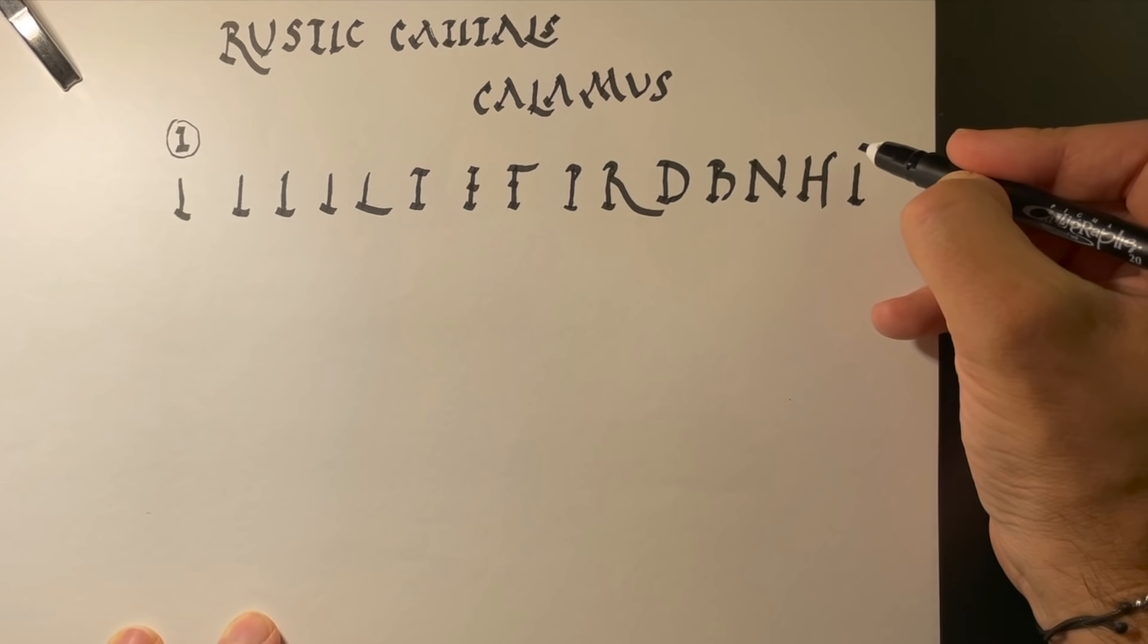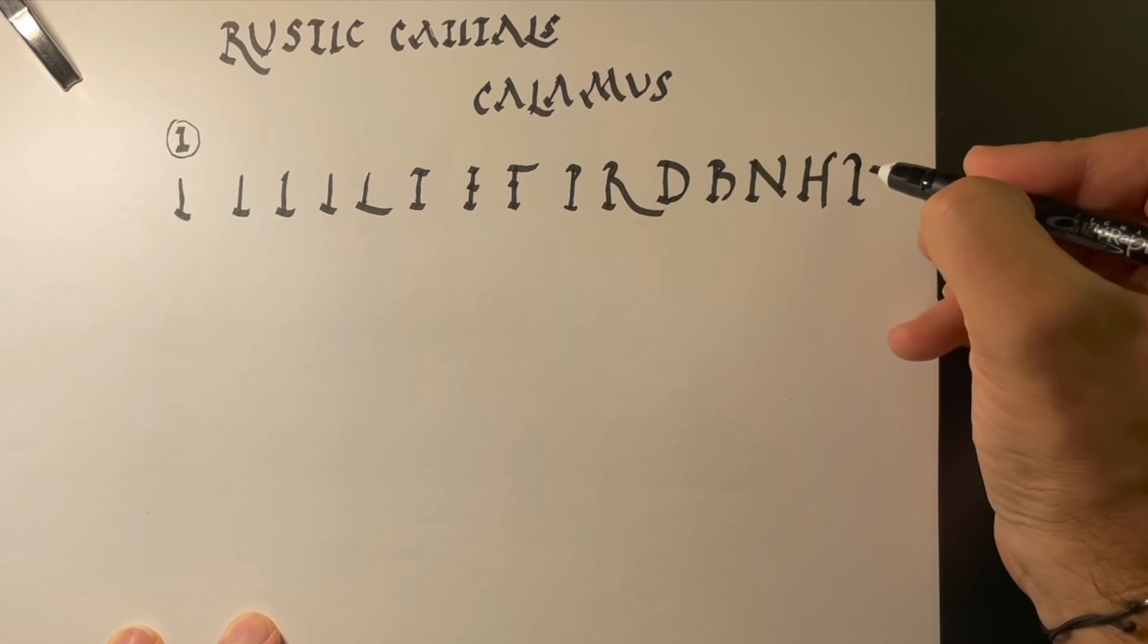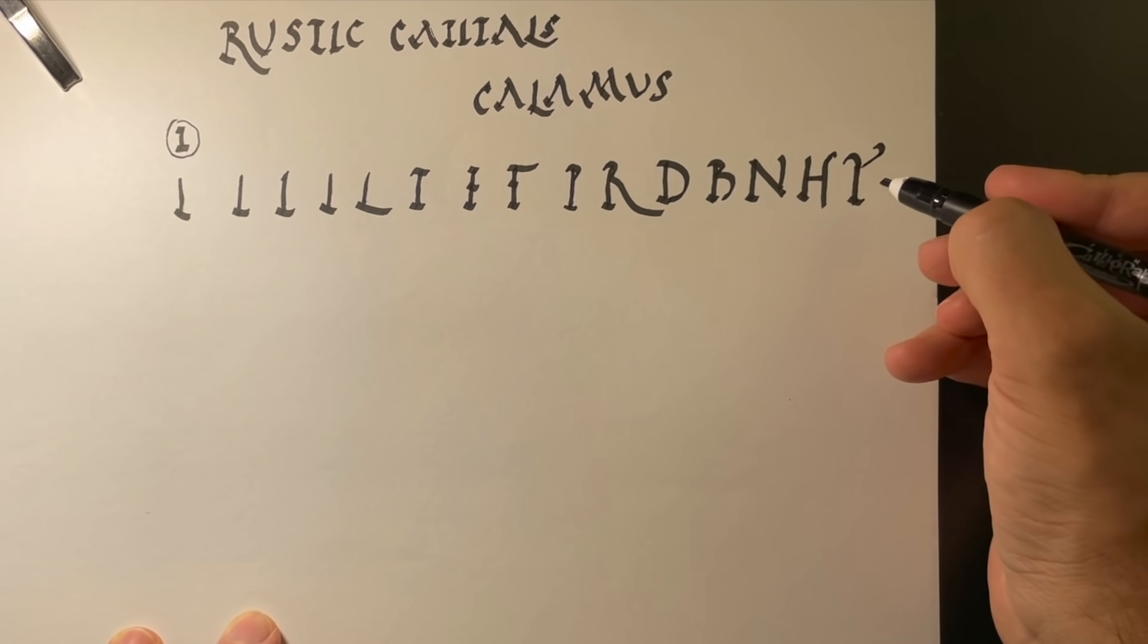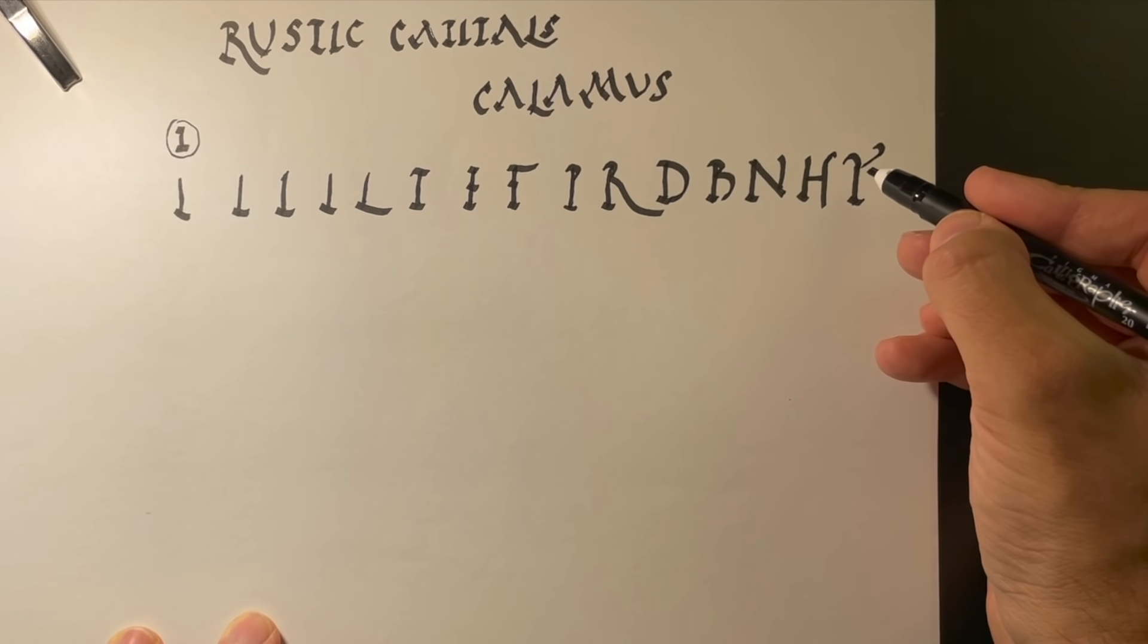So again, if you want the letter Y, the Ypsilon, got a curve up there like that, horizontal, and also has a hook like that. And that'll make it very different looking from the letter U, which we'll see a bit later.